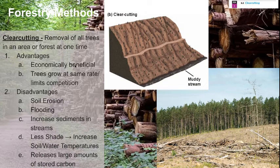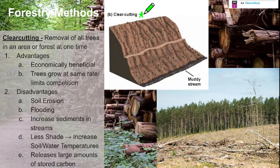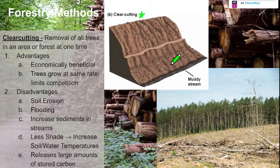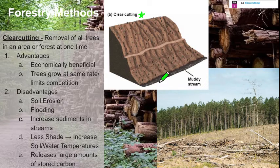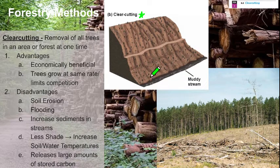The worst method in terms of ecological disadvantages is clear cutting. Clear cutting means going into an area and removing all the trees from one specific area before moving on to the next. It's a great strategy economically — very efficient. You're not moving around the forest grabbing different trees at different times; you harvest one area all at once, which limits competition and is cheaper overall.